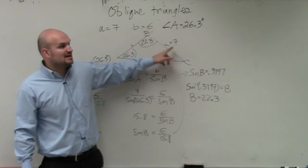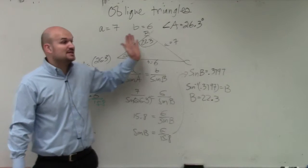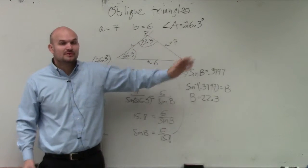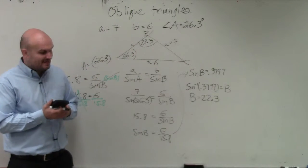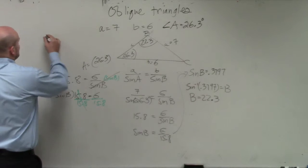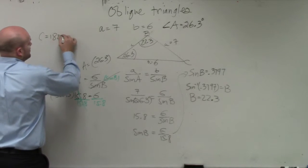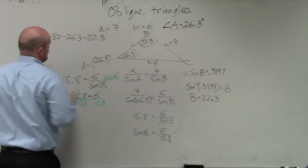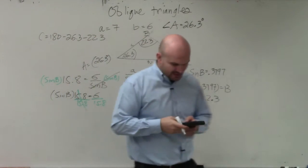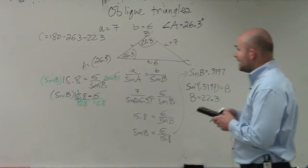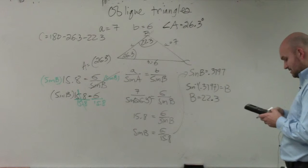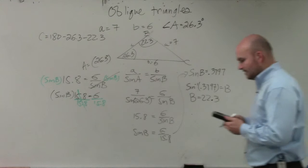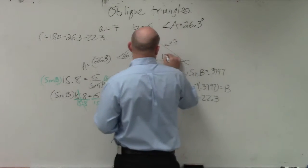And the sum of all angles have to add up to 180. So therefore, to find C, all I simply need to do is say 180 minus 26.3 minus 22.3. So I do 180 minus 26.3 minus 22.3, and I get 131.4.